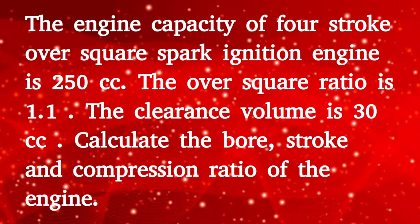Given question: The engine capacity of a 4-stroke over-square spark ignition engine is 250 cc. The over-square ratio is 1.1 and the clearance volume is 30 cc. Calculate bore, stroke, and compression ratio of the engine.